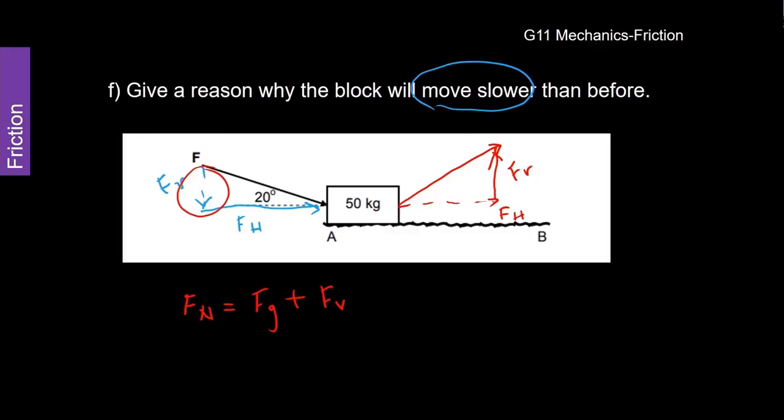So what is making up this downward component or downward force? It is the force of gravity plus this vertical component, which is added, because it's acting in the downward direction. So our normal force is being changed. So we need to say that the normal force is increasing.